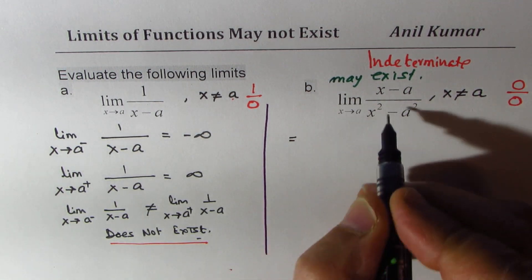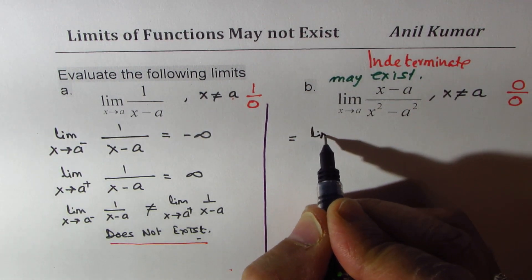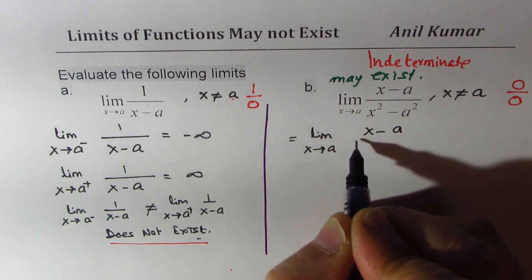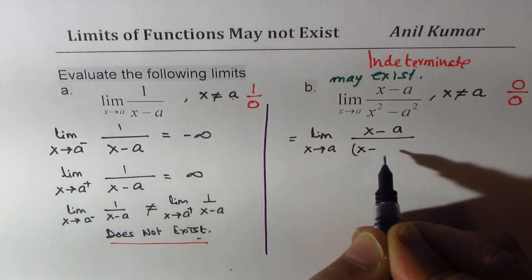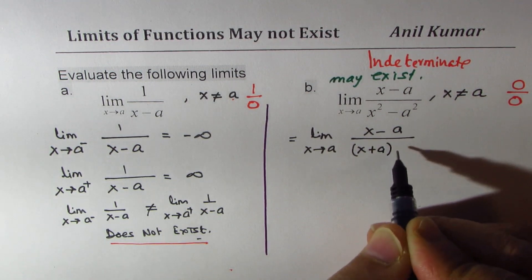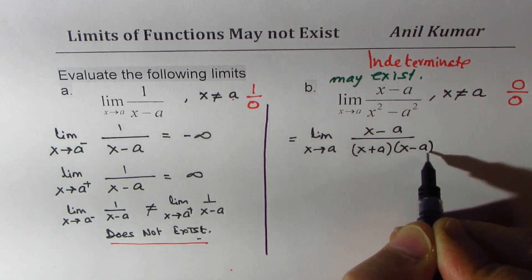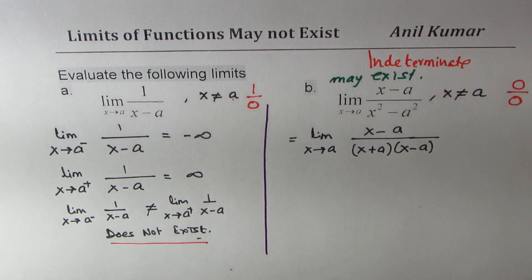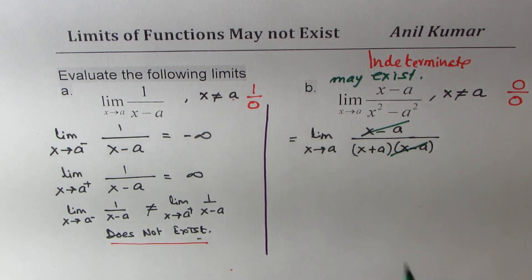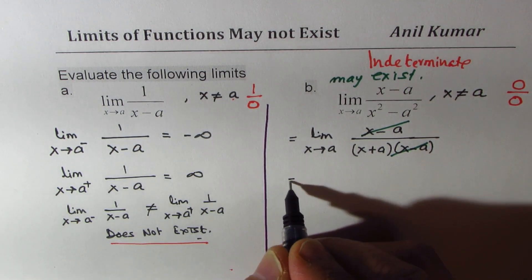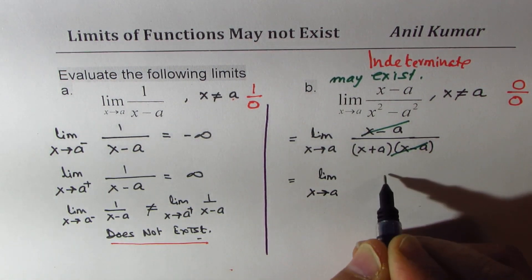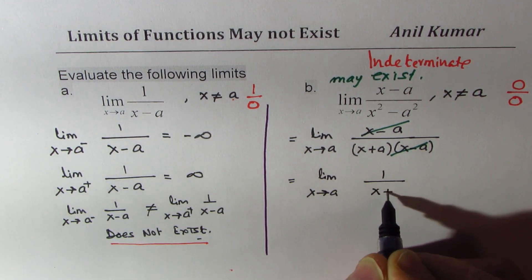So what we can do here is that we can factor. So we get limit x approaches a for x minus a over x plus a times x minus a. You could factor the denominator difference of squares. Now the numerator cancels with one of the factors, and what we are left with is limit x approaches a for 1 over x plus a.